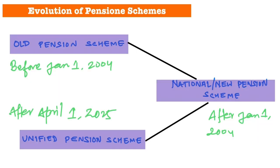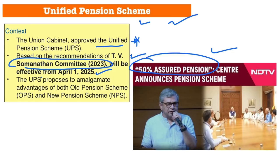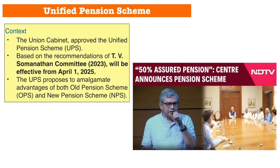In this regard, we will discuss the evolution of pension schemes in India. We will also understand the difference between the Unified Pension Scheme, National Pension Scheme, and Old Pension Scheme. The Unified Pension Scheme proposes the amalgamation of the advantages of both the old and new pension schemes, combining features of both into a new scheme.